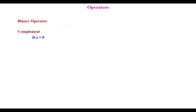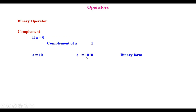Now the bitwise complement operator. If A is 0, the complement of A is 1; if A is 1, the complement is 0. Suppose A equals 10 — in binary that is 1010, which is 8 plus 2 equals 10. The complement flips each bit: 1 becomes 0, 0 becomes 1, 1 becomes 0, 0 becomes 1 — giving 0101, which equals 5. So A is 10 but the complement of A is 5.